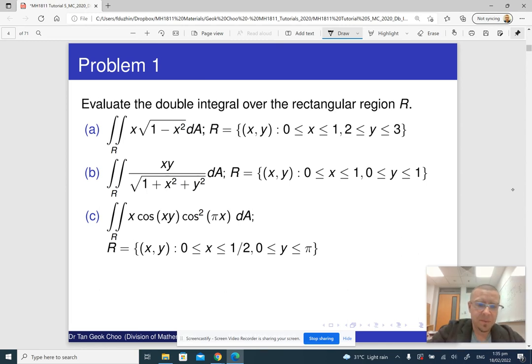So, let me write it, write the integrand first. x times cosine of xy times cosine square of pi x. Now, which of the two variables would you rather integrate it with respect to? Is it easier to integrate with respect to x or is it easier to integrate it with respect to y? And, of course, it is easier to integrate with respect to y because y only appears once here.